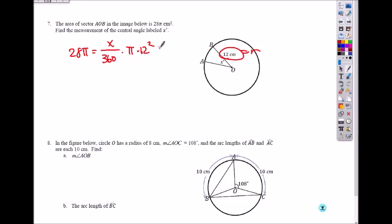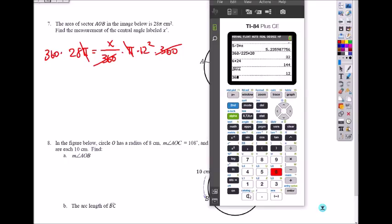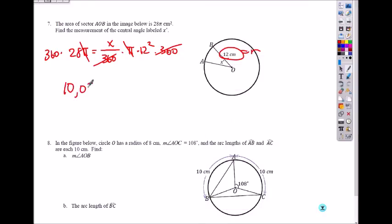So you do the same thing. Divide by pi on both sides, get rid of it. And multiply by 360 to get rid of the denominator first. So what's 360 times 28? That's 10,080. Equals 12 squared, which is 144 times x.